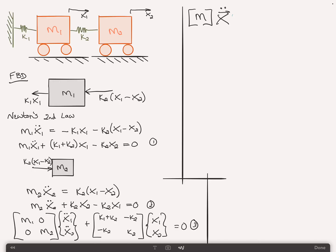M X double dot, and I'll write it now explicitly of T, plus K X of T is equal to zero, where X of T is simply the vector X1 of T and X2 of T.